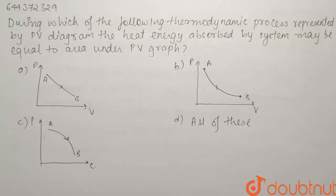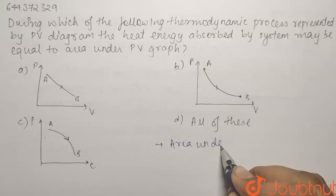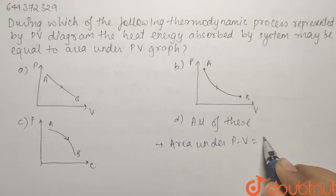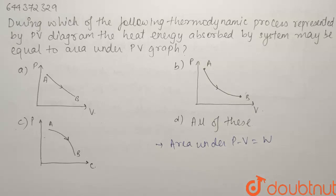What is area under PV graph? Area under PV graph is given by the work. If you find out the area under PV graph, it will be equal to the work done and we know Q is equal to delta U plus W. So we have to find out the process in which the heat absorbed by system may be equal to the area under the PV curve.